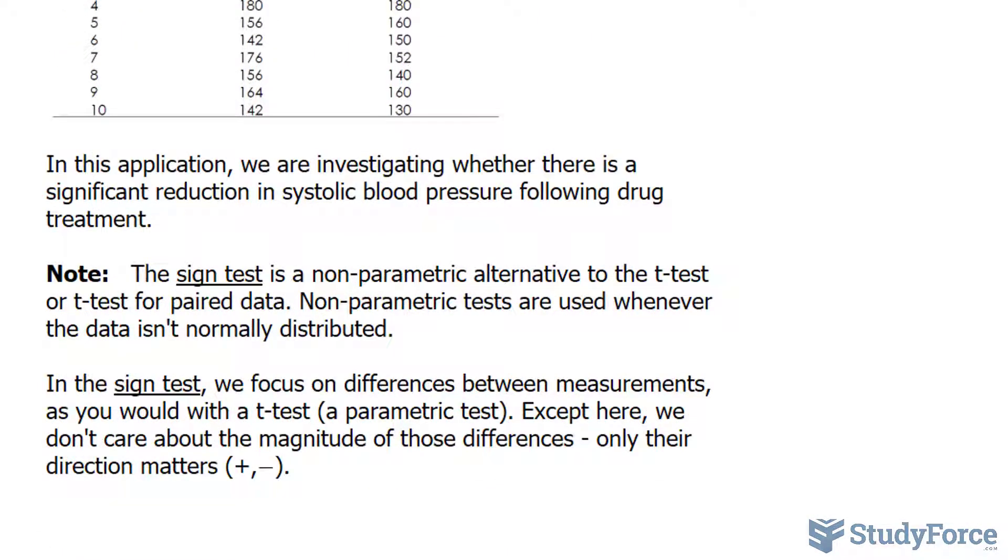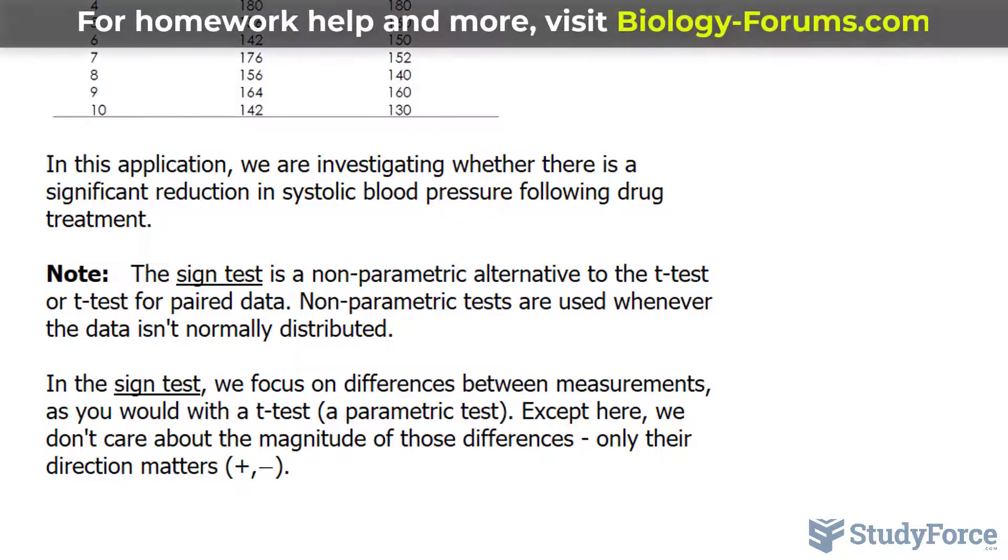Before we start, the sign test is a non-parametric alternative to the t-test or t-test for paired data. Non-parametric tests are used whenever the data isn't normally distributed. Since we weren't told in the question that this is normally distributed, we then use the sign test over the paired t-test.